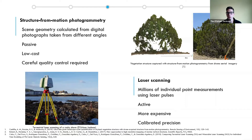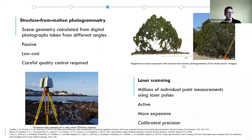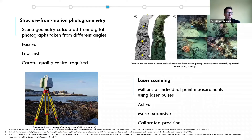The flexibility of the technique does mean there are a number of places where error can creep in, so really careful quality control is required to make sure the products are as accurate as they may first appear. The overlapping photographs can be taken from any platform — handheld cameras, commonly drone-mounted cameras as shown in the top right where vegetation is being modelled with aerial imagery, and here a vertical marine structure habitat is being modelled using imagery from ROVs, where video footage was turned into stills used for the modelling.